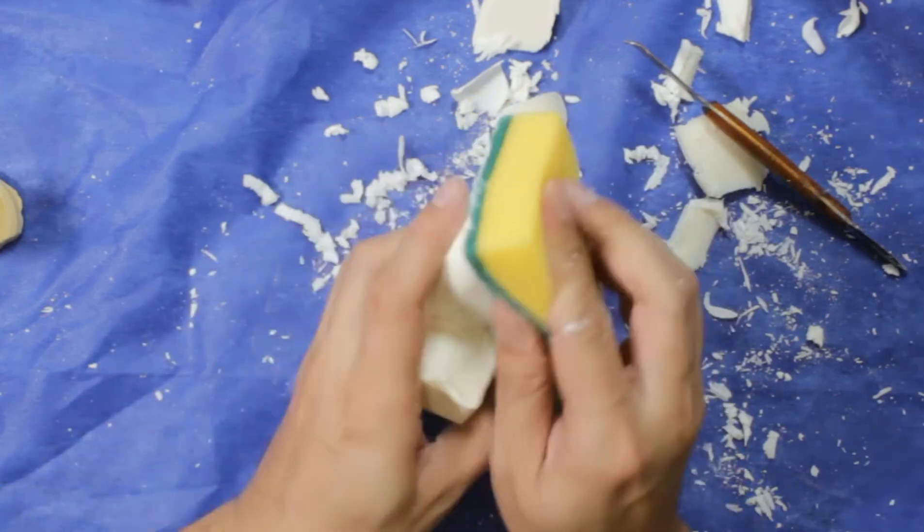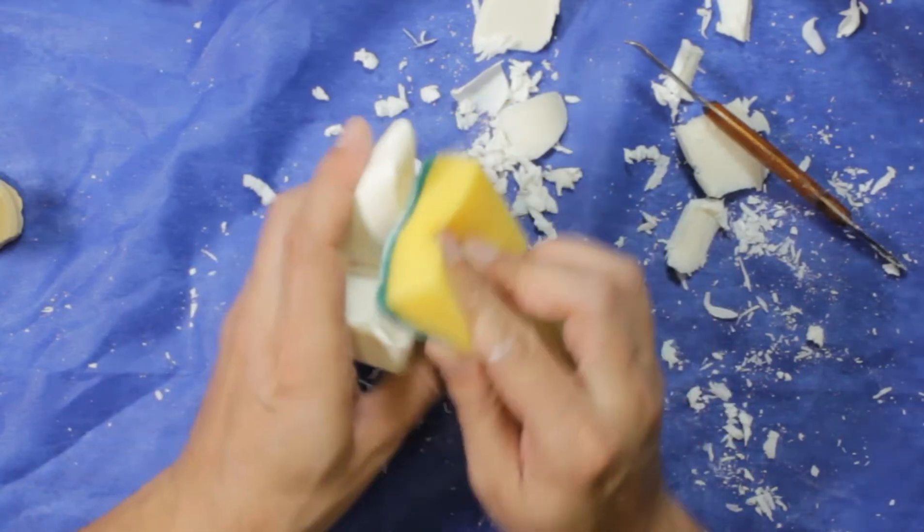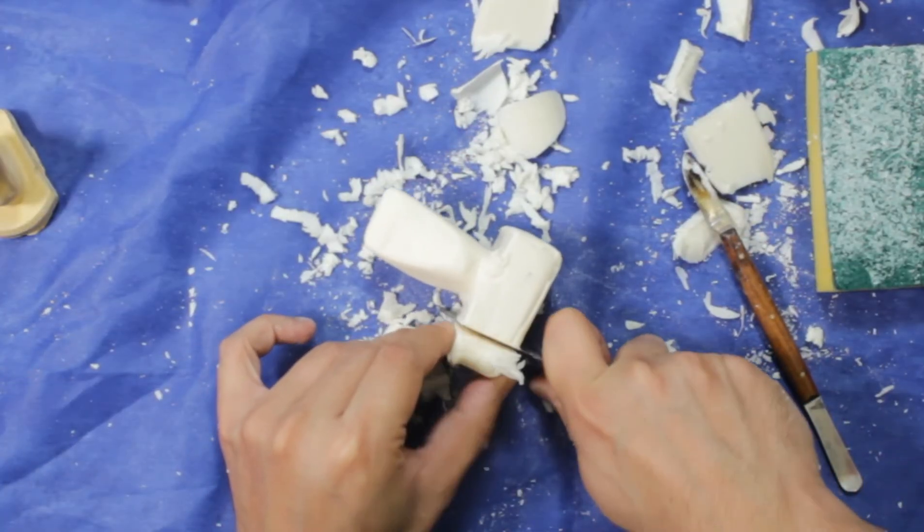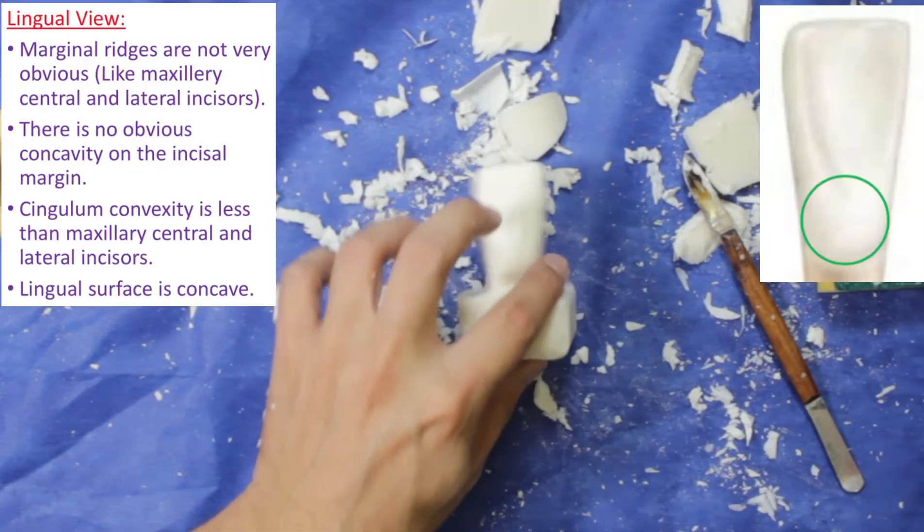After then, we will clean knife marks with the sponge. You can fix the soap tray; it will look better. Now we will shape the lingual face.